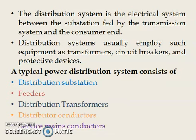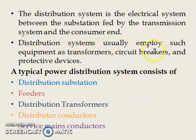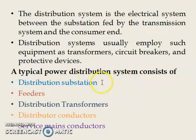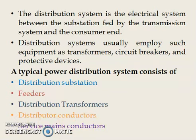The distribution system is the electrical system between the substation fed by the transmission system and the consumer end. Distribution systems usually employ equipment such as transformers, circuit breakers, and protective devices. A typical power distribution system has distribution substations, feeders, distribution transformers, distributors — which are conductors — and service mains, which are also conductors.